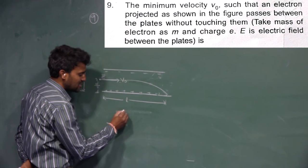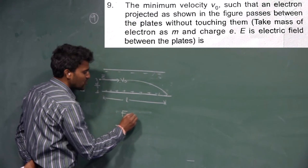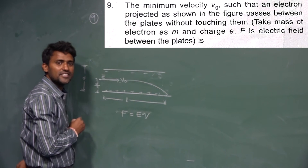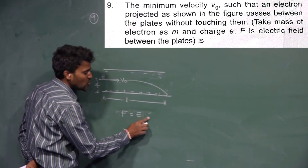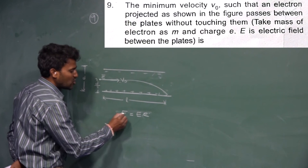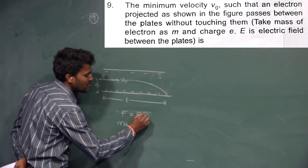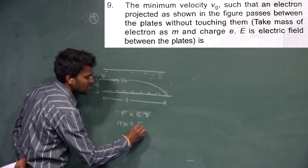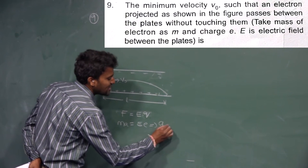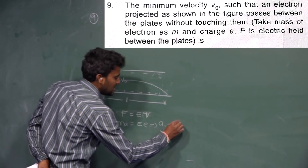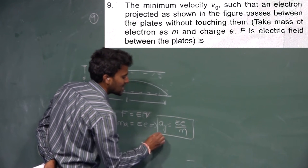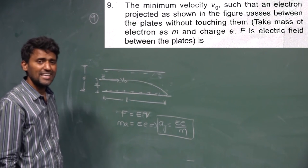The force experienced by the electron inside the electric field is F = EQ, where Q is the electron charge, written as small e. According to Newton's second law, F = MA. So the acceleration along the vertical direction, A_y, is equal to eE divided by M.